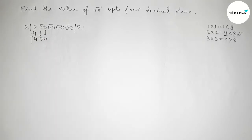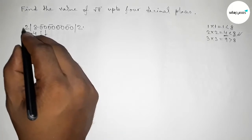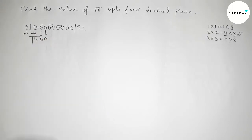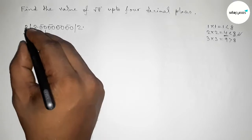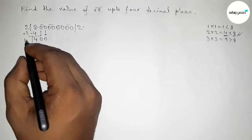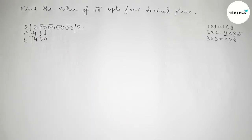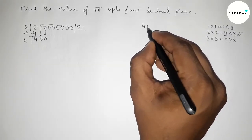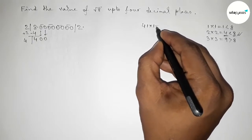Now an important step: the current quotient digit is 2, so we add 2 to itself — 2 plus 2 equals 4. Next, we choose a digit beside 4 and multiply by that digit, looking for a result less than 400 and almost near 400.